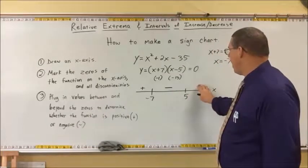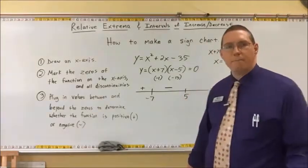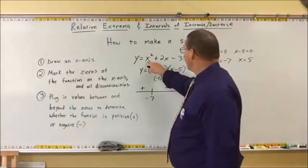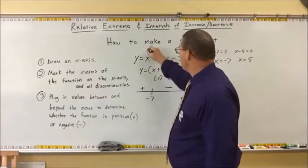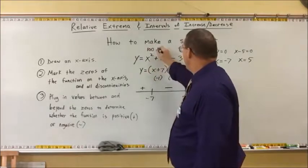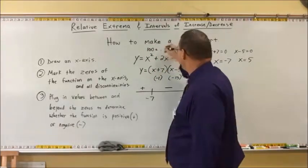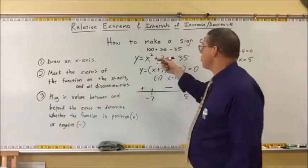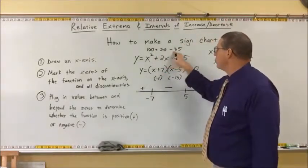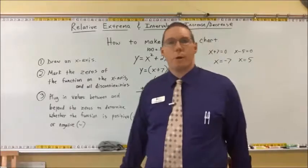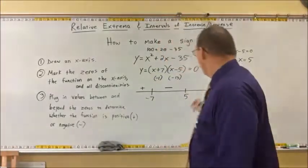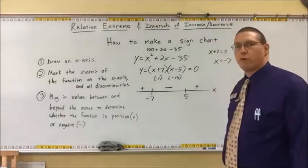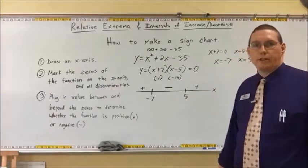Now let's go above 5. Pick a number larger than 5 — how about 10? Plugging into the original function: 10 squared is 100, plus 2 times 10 is 20, minus 35. That's 120 minus 35 — we know it's positive. So we put a positive sign there. And we have just created a sign chart.